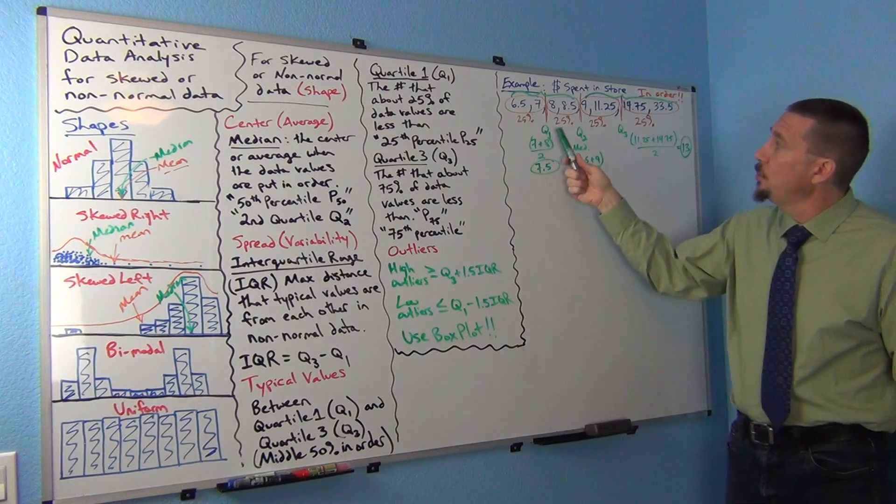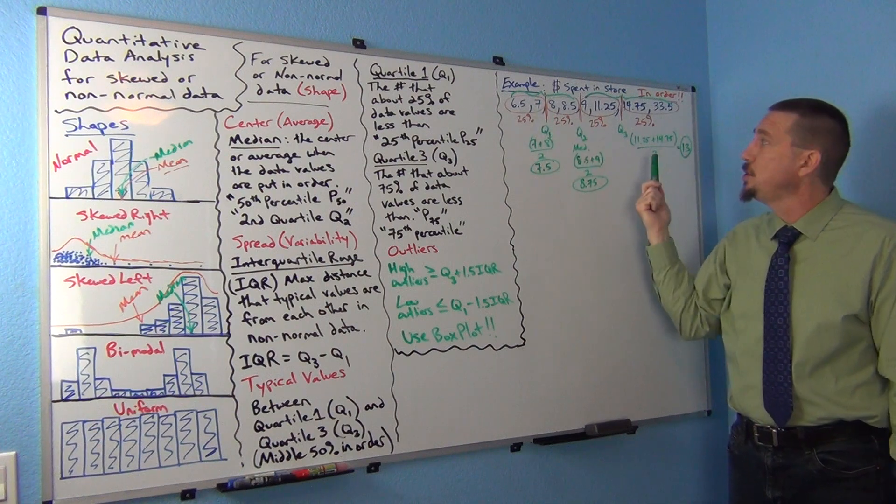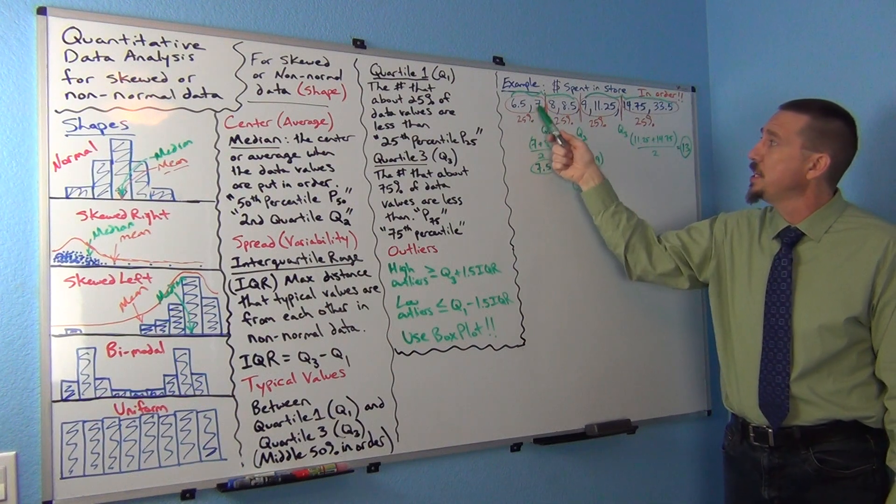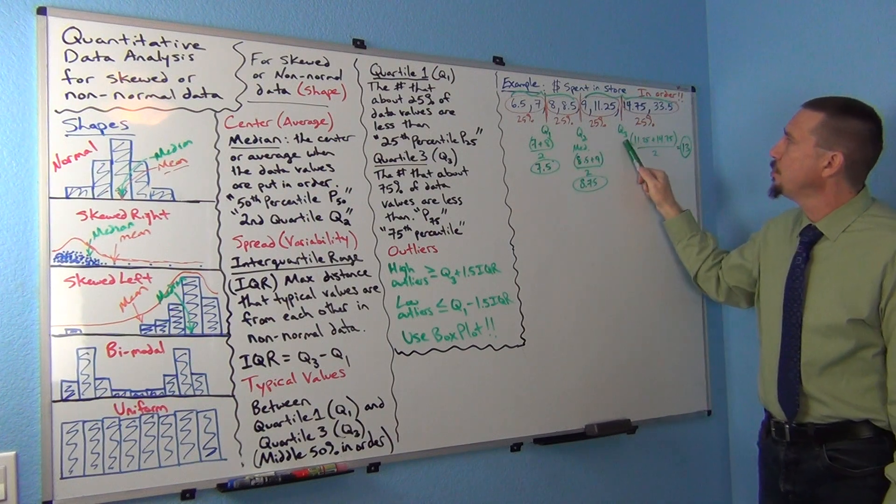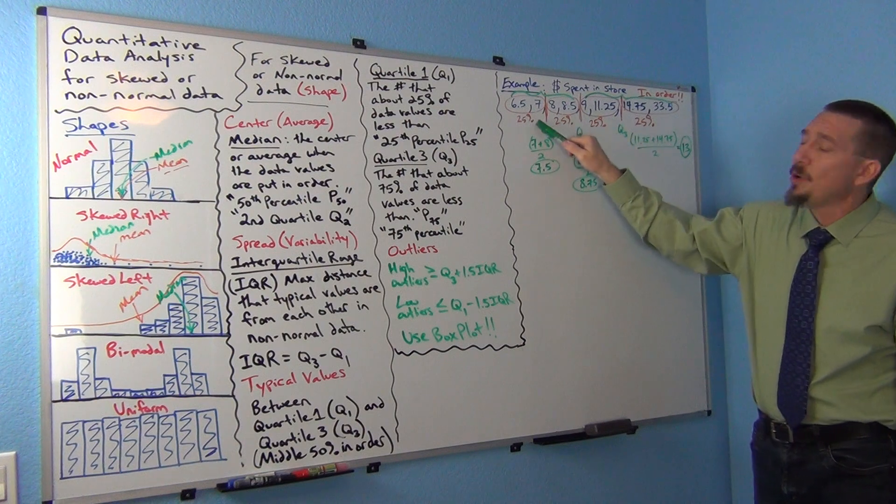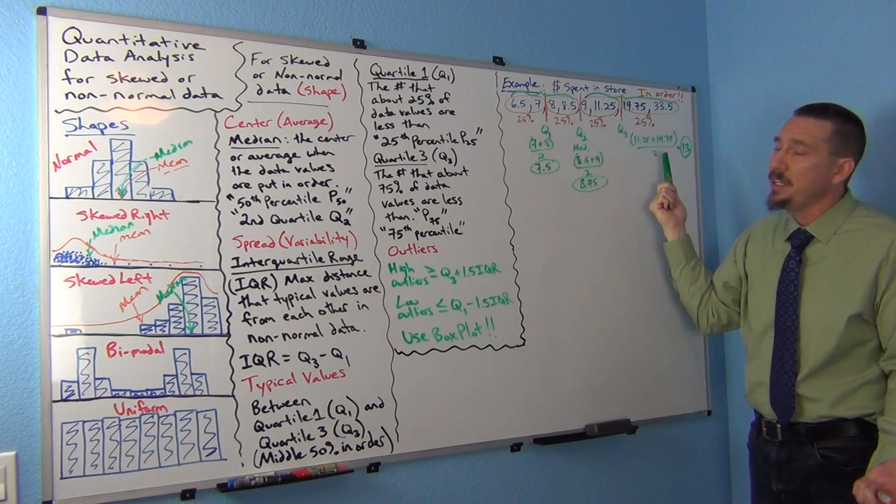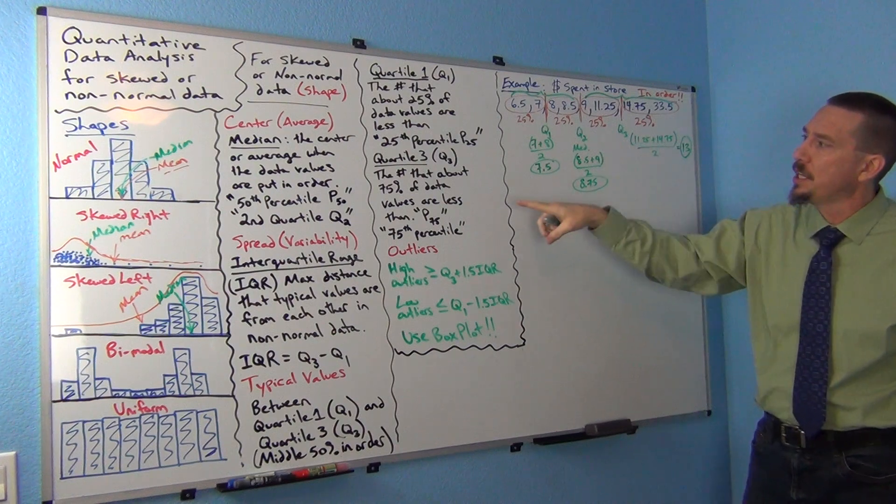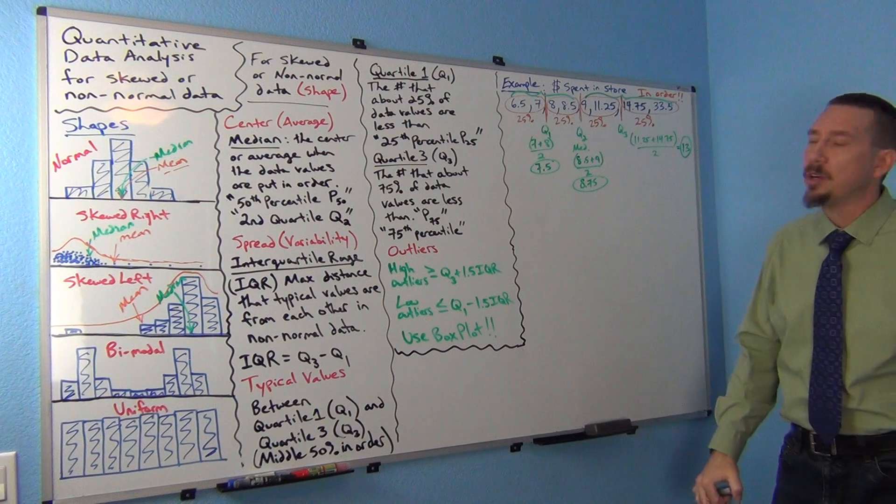Notice that quartile one - about 25%, two numbers out of eight would be 25%. So 25% of the data values are less than Q1. What about Q3? Quartile three, we have three groups of 25% below quartile three, so 75%. That's why we said quartile three is the number that about 75% of the data values are less than.